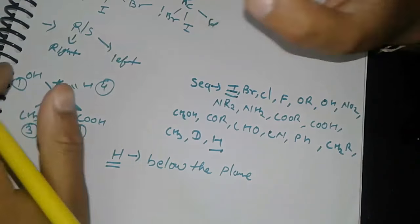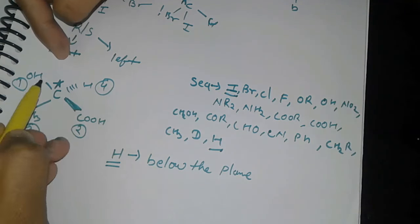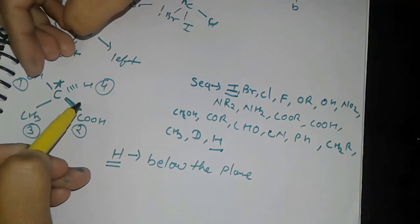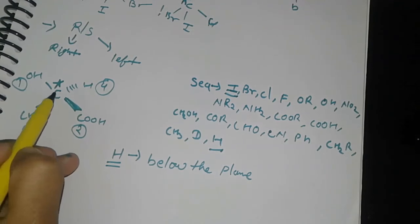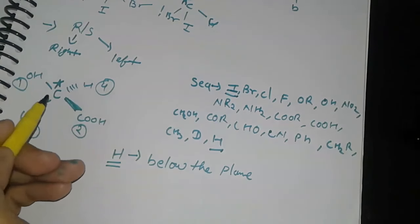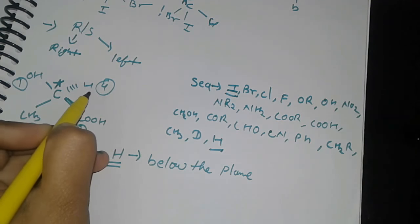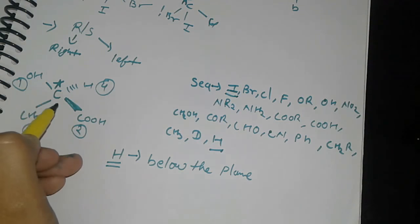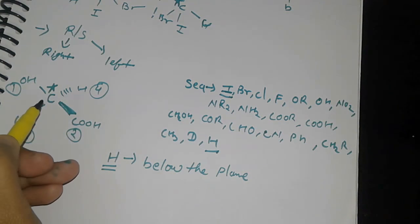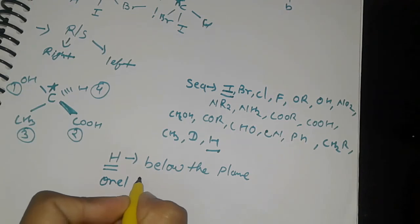If R is coming, it's R; if S is coming, it's S. But if the position adjacent to below the plane requires one time change to bring hydrogen below the plane, then the rotation you get is opposite. If you're getting R but hydrogen is not below the plane, you have to do inversion of configuration.